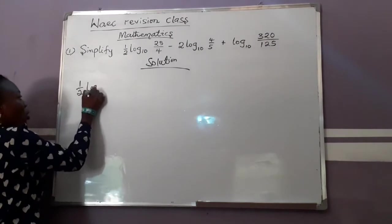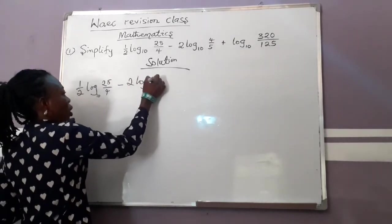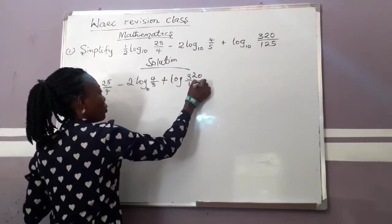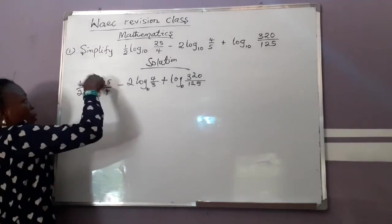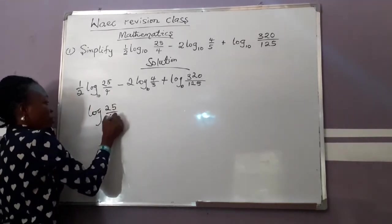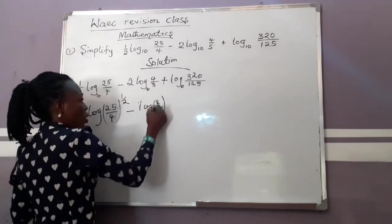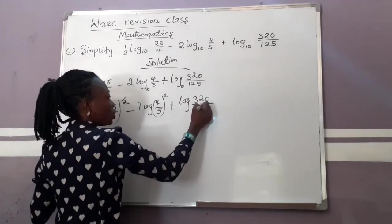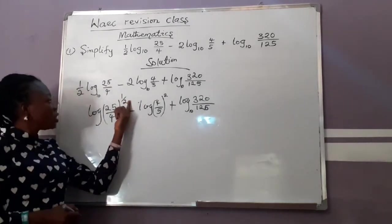We have 1 over 2 log 25 over 4 base 10, minus 2 log 4 over 5 base 10, plus log 320 over 125 base 10. Now, for this log, the 1 over 2 coefficient — we're going to move it up as a power. So we get log (25 over 4) to the power of 1 over 2, minus log (4 over 5) to the power of 2, plus log 320 over 125. Now 1 over 2 is the square root.